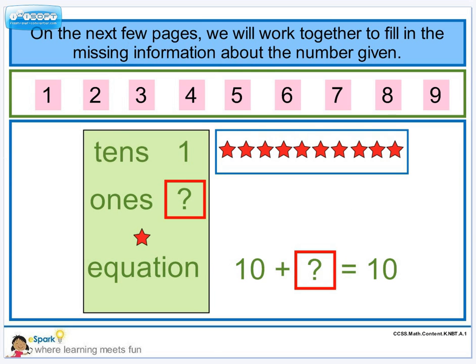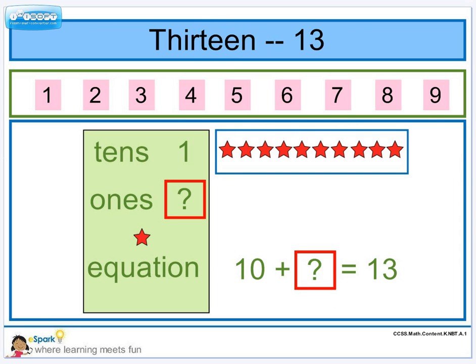So now let's do some work together. We're going to fill in some information to make our pages complete. So we've got 13. I have my group of 10. Then I'm going to pull over 3 stars so that I can have 13. And I'll pull down my number 3. So I have 3 1s, and that matches. And now I have 10 plus 3 equals 13.